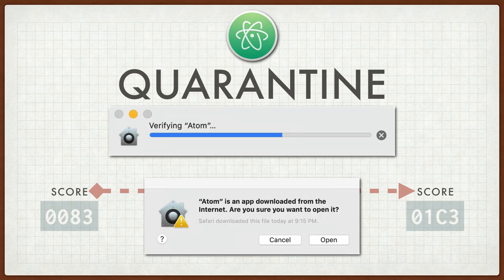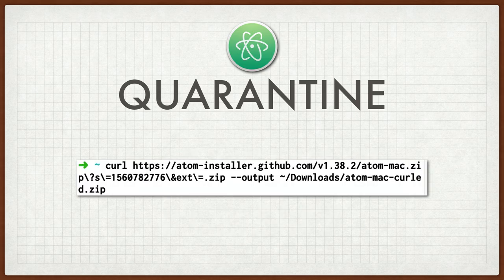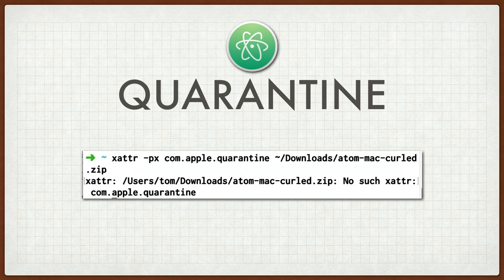So, quarantine. We have done this by downloading a file directly through a web browser. What if I cheat? That's how it's supposed to work in Gatekeeper, where it all comes together. But what if I didn't want Gatekeeper to interact with the download at all? Enter our friend curl. I pulled up terminal, downloaded the atom package directly from GitHub's releases page, and threw it out to my desktop. Then I performed the xattr command again and said, show me the com.apple.quarantine extended attribute of that file. Well, no such attribute exists. I have bypassed Gatekeeper by using curl. This isn't ideal, but we'll get to why that's important.